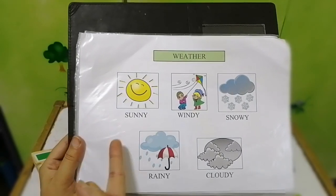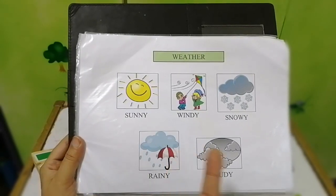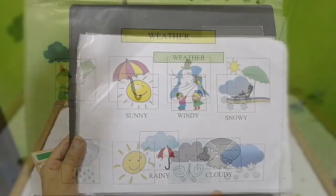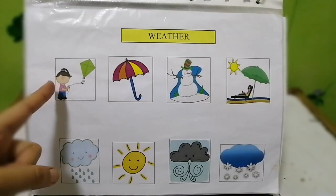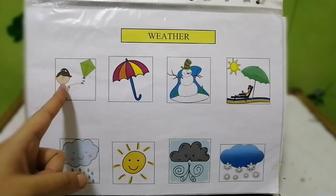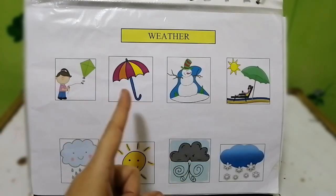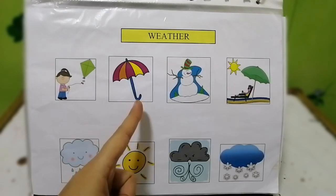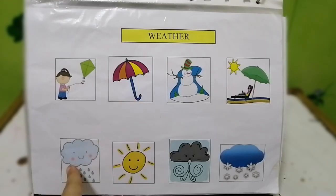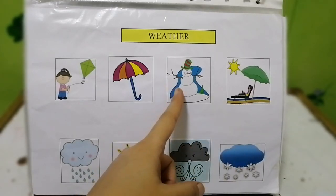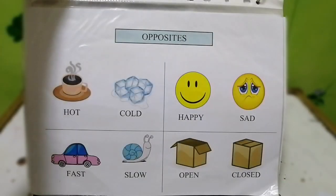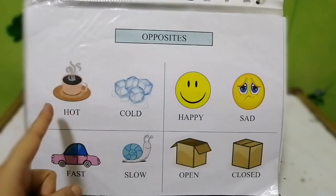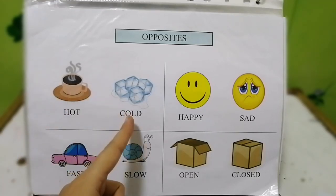On the next page we have weather: sunny, windy, snowy, rainy, and cloudy. The child will match the given situation with the weather — we fly a kite in windy weather, use an umbrella in rainy season, enjoy the hot sun in summer, and build snowmen in snowy weather.